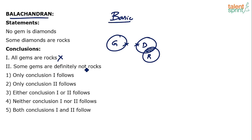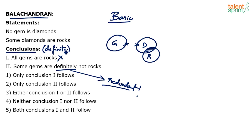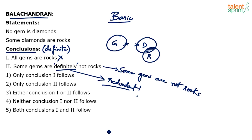Second conclusion: some gems are definitely not rocks. Understand — the word 'definitely' here is redundant. Whether the word is given or not, it won't change the meaning of the sentence. Some gems are definitely not rocks is as good as some gems are not rocks. By default, a conclusion is supposed to be a definite conclusion unless possibility is mentioned explicitly in the question. So basically the conclusion here is some gems are not rocks.